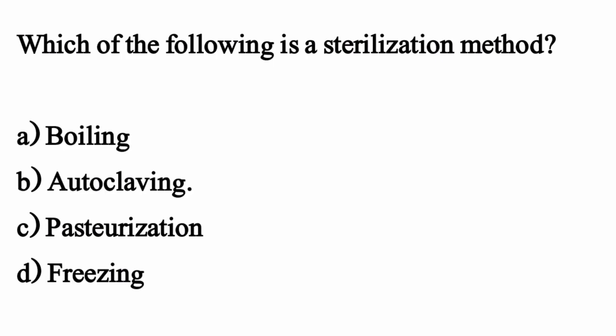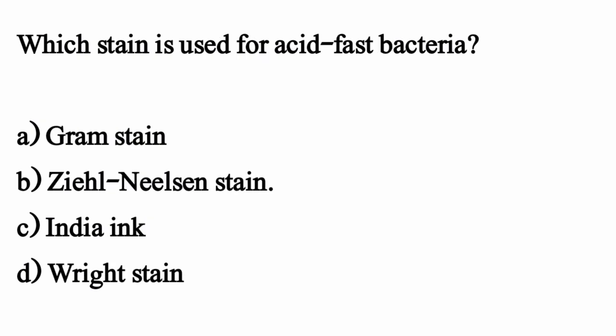Which of the following is a sterilization method? The correct option is option B: autoclaving. Which stain is used for acid-fast bacteria? The correct option is option B: Ziehl-Neelsen stain.